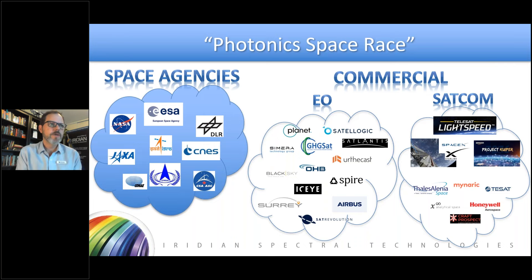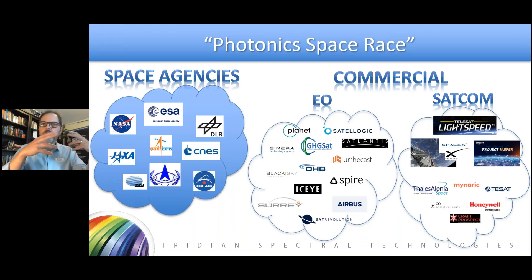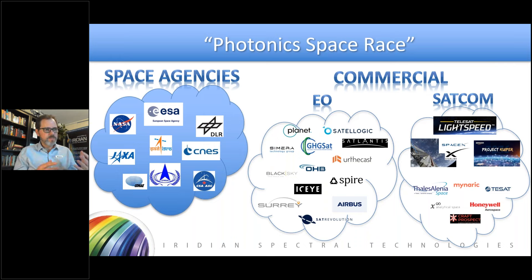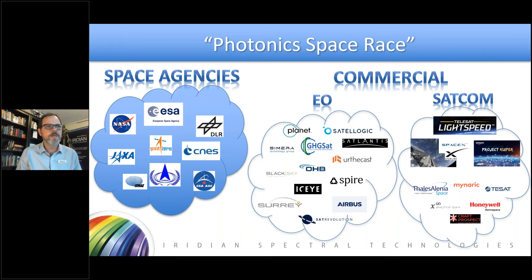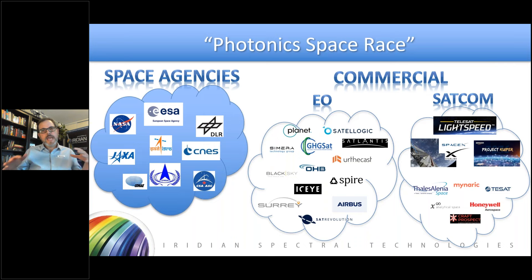What historically was exclusively the domain of space agencies has evolved into more of a commercial activity. Space agencies like ISRO are still actively involved, having sent up rockets with 160 different satellites. On the Earth observation side, commercial companies range from Planet and Satellogic, which create their own satellites and provide data to customers, to companies like Surrey Space Technology Laboratories that create instruments for other customers' satellites. On the SATCOM side, large constellations are providing internet from above.